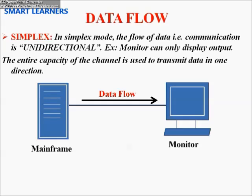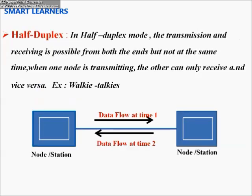Data flow has three modes. The first is simplex mode, where communication is unidirectional — control is passed only from the mainframe to the monitor; the monitor displays it but gives no response back. In half duplex mode, transmission and receiving are possible from both ends, but not at the same time. When one node is transmitting, the other can only receive, and vice versa. An example is a walkie-talkie.